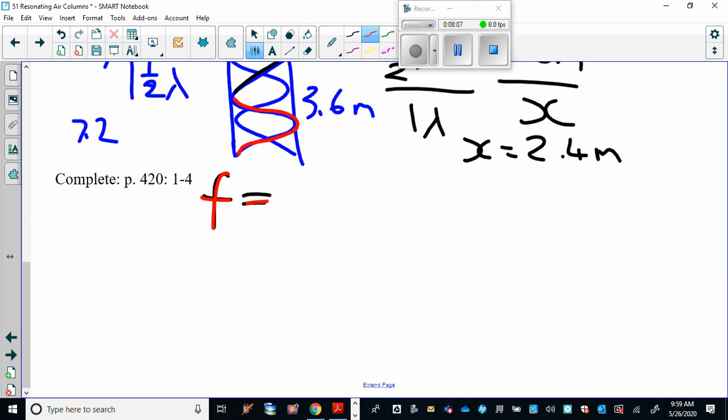Frequency equals speed of sound divided by the wavelength, and you end up getting 144, 144 hertz or cycles per second. So that's going to be a higher pitch. The higher the frequency is, the higher the pitch is.